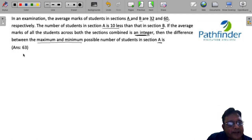You have a section A where the number of students is N and the average marks are 32, and you have a section B where the number of students is 10 more. If A has 10 less, that means B has 10 more and the average score is 60.